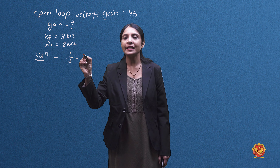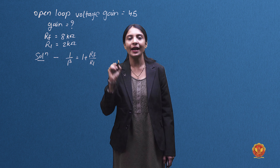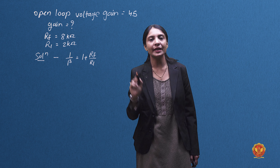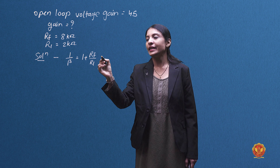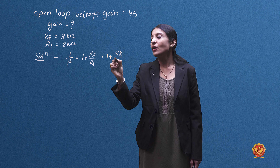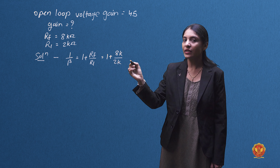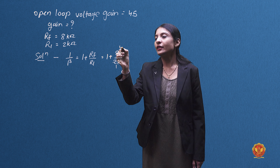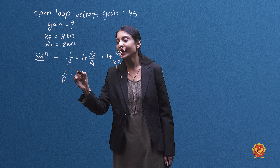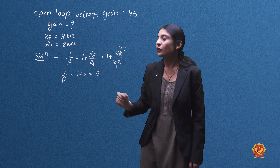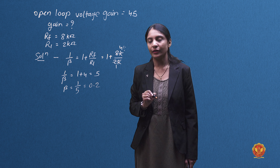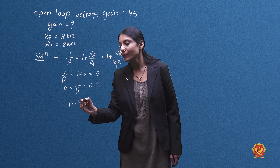The gain formula is: 1/β is equal to 1 plus the feedback resistance divided by R1. So 1/β = 1 + (8 kohm / 2 kohm). Dividing 8 by 2 gives 4. So 1/β = 1 + 4 = 5. Therefore the value of β is 1/5, which is 0.2.